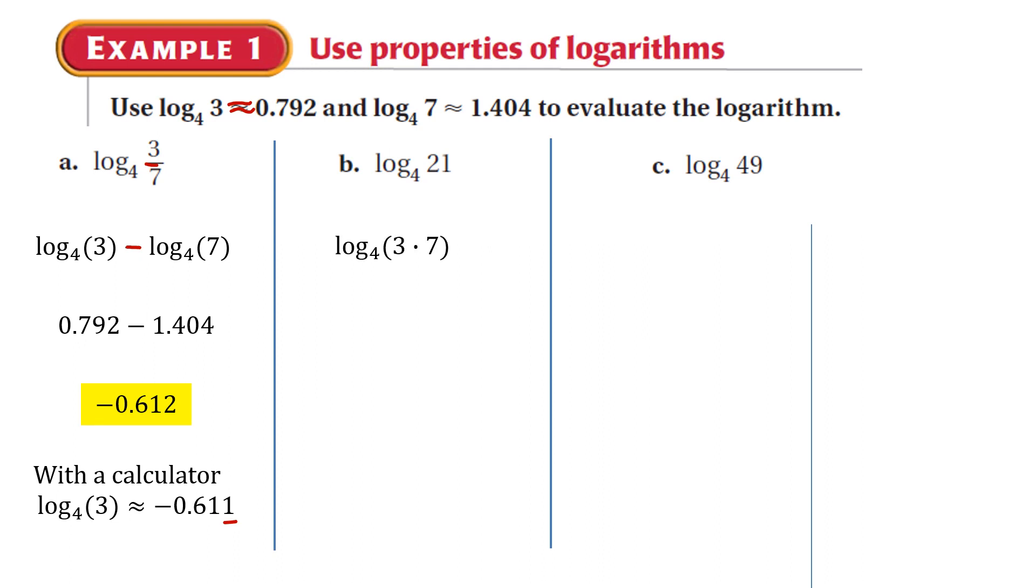Next one, log base 4 of 21. We can say that 21 is 3 times 7. And then use the product property of logs. Substitute the values we have from above here. Add them, and we get 2.196. And again, that makes sense, because 4 to the second power would be 16. So 4 to the 2.196 power would give you approximately 21.